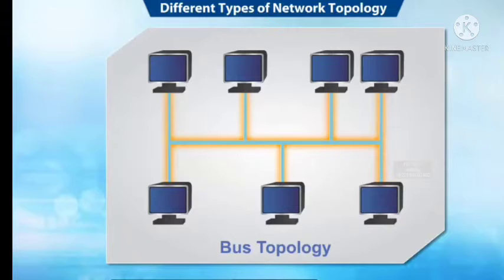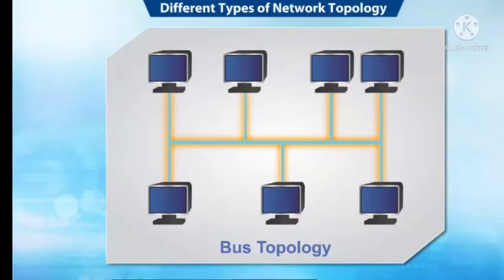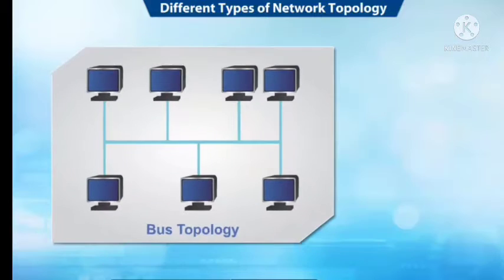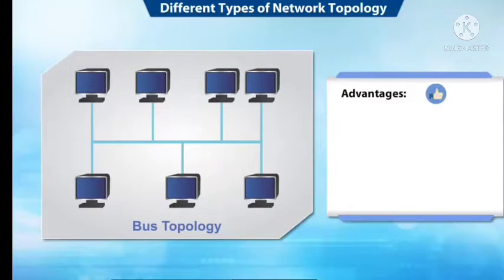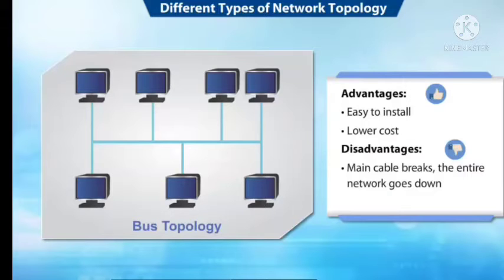Bus topology uses a single common cable to connect all the nodes. The common cable acts as a backbone for the network, and one of the computers acts as a server. The advantages of bus topology include easy connectivity and low cost. The disadvantage is that when the main cable breaks, the entire network goes down and it is difficult to troubleshoot.